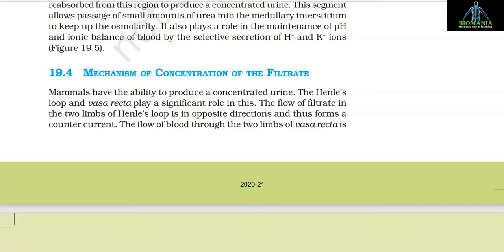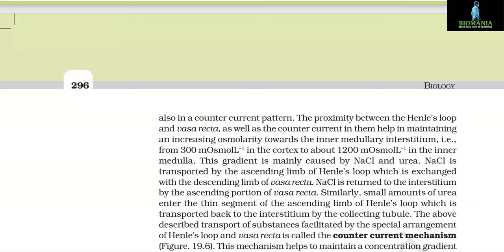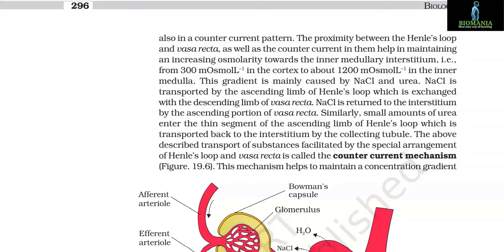Section 19.4: Mechanism of Concentration of the Filtrate. Mammals have the ability to produce concentrated urine; the loop of Henle and vasa recta play significant roles. The flow of filtrate in the two limbs of Henle's loop is in opposite directions, forming a counter current. The flow of blood through the two limbs of vasa recta is also in a counter-current pattern. Their proximity and counter-current arrangement help maintain and increase osmolarity towards the inner medullary interstitium — from 300 mOsm/L in the cortex to about 1200 mOsm/L in the inner medulla. This gradient is mainly caused by NaCl and urea.